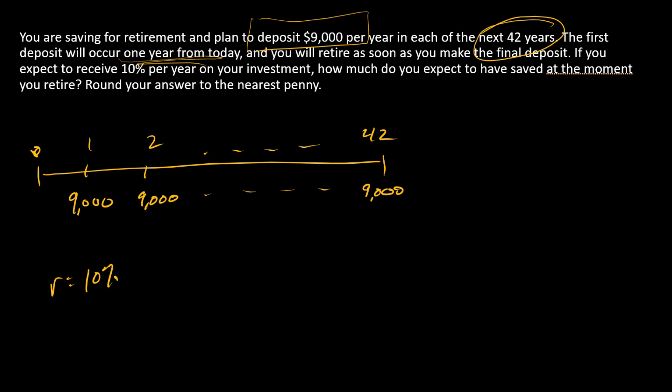What are we looking for? We're looking for the amount that you have in the account immediately after the final payment. So we're looking for an FV at time 42.